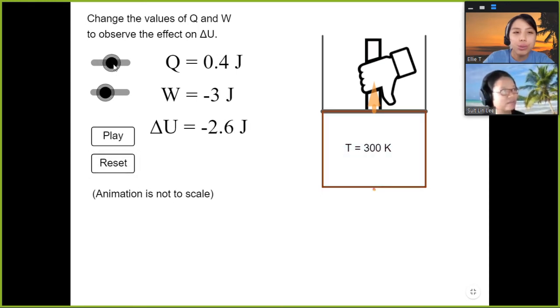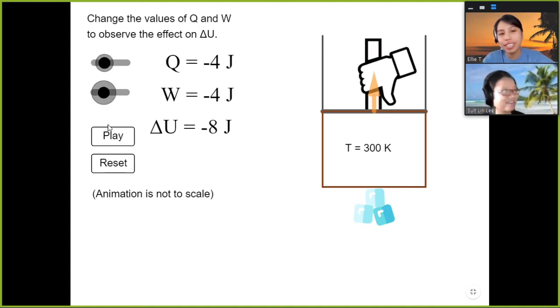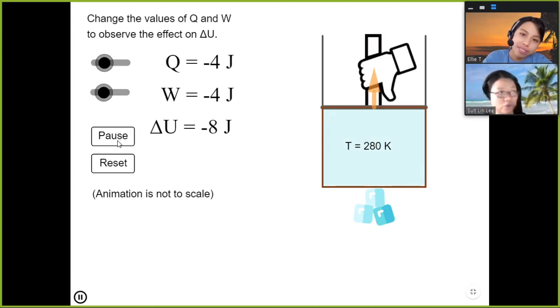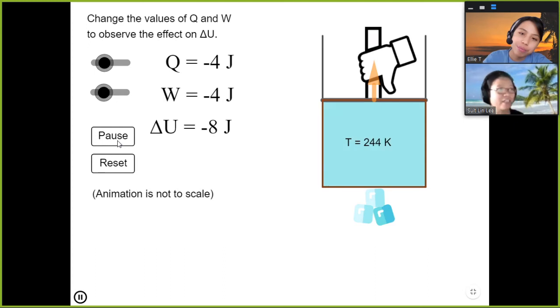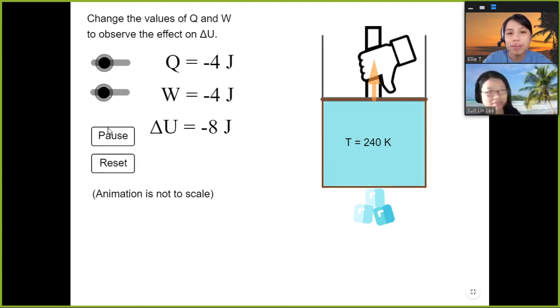Then you can also do one where you remove heat - they put ice cube to show that you remove heat. But also you force the gas to expand. You do work done by gas. So the temperature will drop very fast. Because now I need to throw out heat to the environment. I also need to expand. This is called very tired. So the temperature decrease.